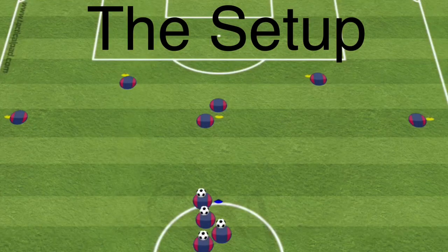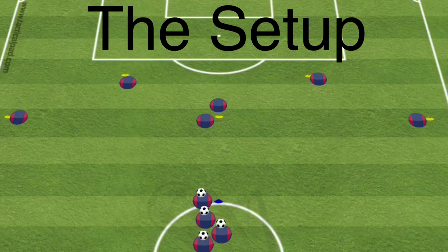Passing patterns are sequences of passes and movements designed to create space, manipulate the opposition, and forge goal-scoring opportunities. By practicing these patterns, players learn to anticipate their teammates' movements and make quick, accurate passes. They can be practiced in training sessions to improve team coordination, build technical skills, and develop tactical awareness.